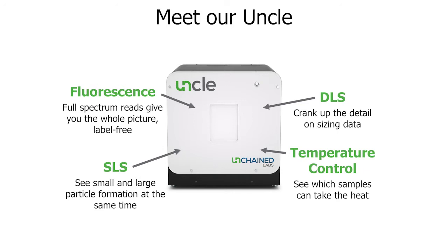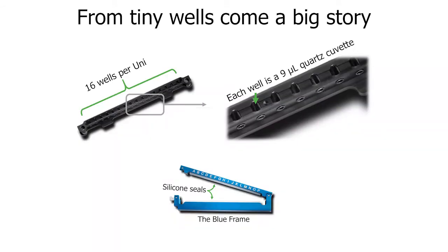All measurements are done with temperature control, so you can make measurements at room temperature, elevated temperature, or more commonly across a thermal ramp. The UNCLE's key feature is the Uni sample holder — an array of 16 quartz cuvettes easily loaded with a pipette. The high-grade quartz provides great optical sensitivity for fluorescence and light scattering data, and the anodized aluminum frame provides efficient heat transfer. After loading, the sample is clipped into a blue frame where silicone gaskets ensure the sample is always sealed with no risk of evaporation as temperature increases. The Uni provides a combination of throughput and small sample volume.